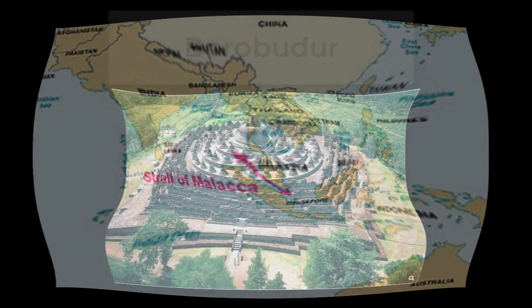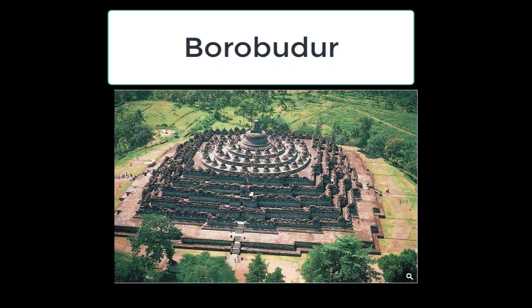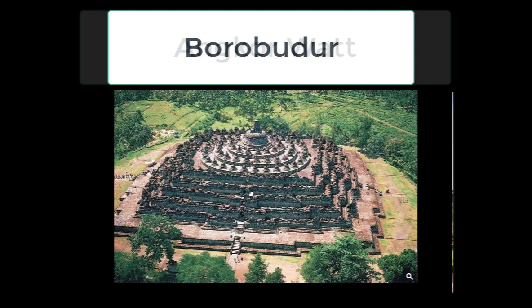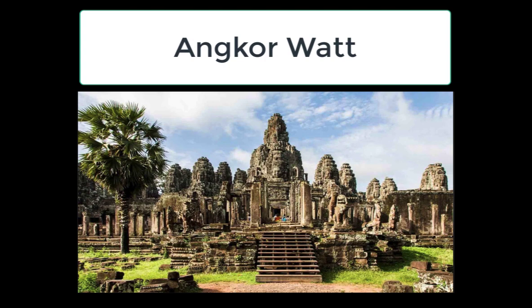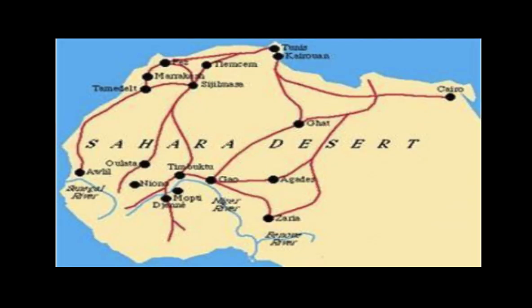This openness led to a massive mixture of Buddhist, Islamic, Hindu, and Confucian culture, best seen in the monuments of the region. For example, the Borobudur monument is a Buddhist pyramid-like structure reaching toward the sky, representing detachment from this world, while nearby Angkor Wat's monuments represent Hindu gods. The Indian Ocean created an extraordinary degree of cultural blending and synthesis.